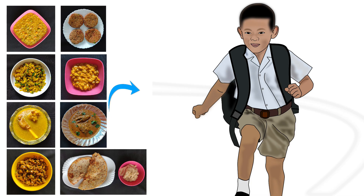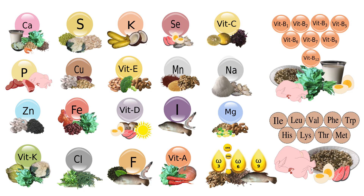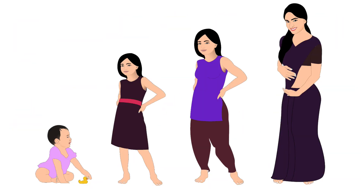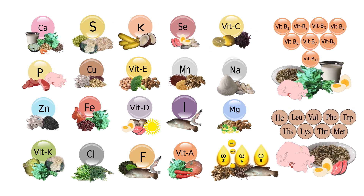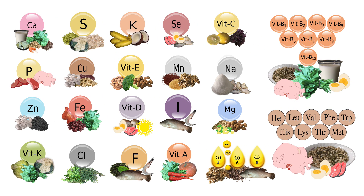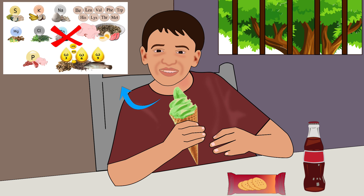Food gives us energy and nutrients. Nutrients are necessary for the growth and maintenance of our body. Some of these nutrients cannot be produced by our body — such nutrients are called essential nutrients. There are 40 essential nutrients that we must obtain from food. We cannot get adequate amounts of these nutrients from nutrient-poor foods.